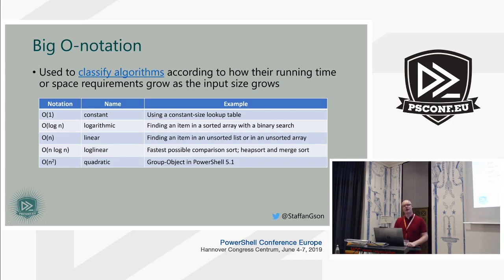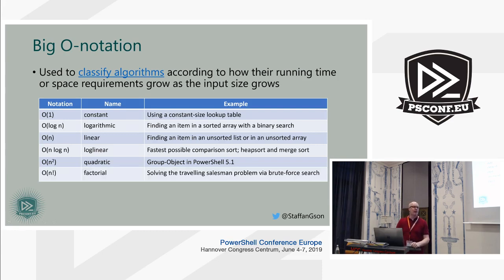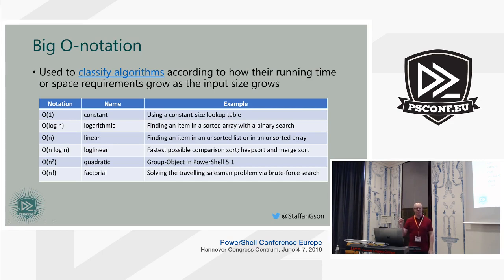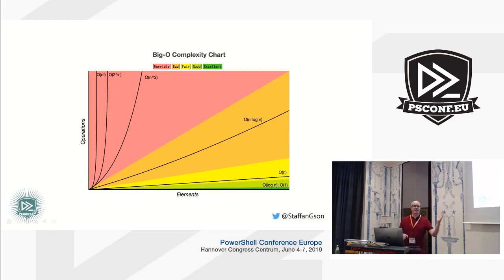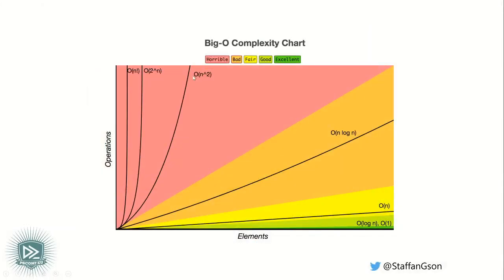Quadratic O(n²) is when the runtime is the input times itself. Group-Object in PowerShell showed quadratic complexity for the worst case input. Factorial complexity is even more horrible — the Traveling Salesman Problem is a classic example: given a set of towns, what's the optimal route? For small inputs it's manageable, but the complexity grows incredibly fast. There's a picture showing the badness of these different complexity classes, and this is where the worst case of Group-Object was.